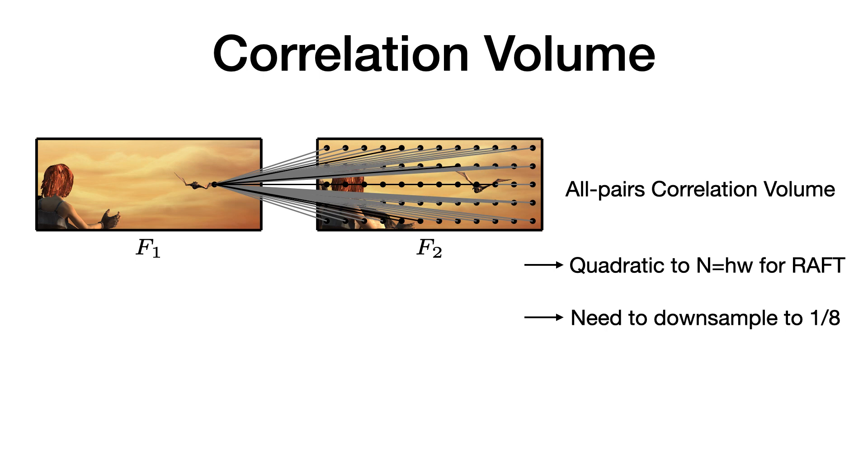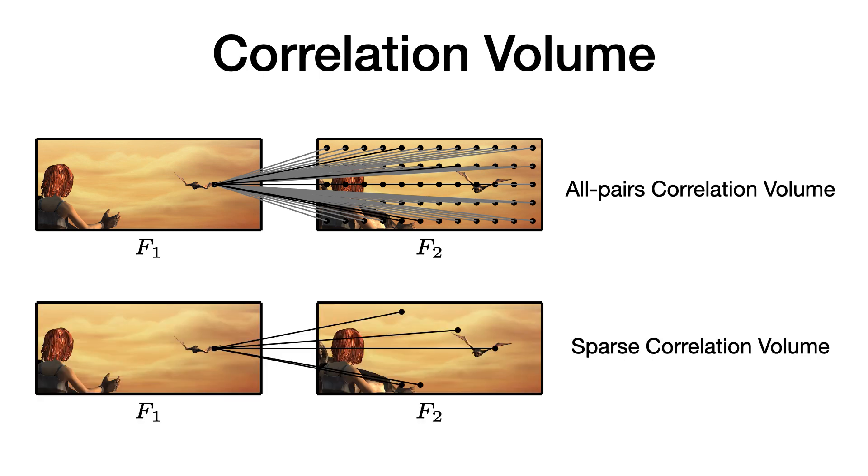In this paper, we present a new representation, the sparse correlation volume. Compared to the all-pairs correlation volume, for each feature vector, only the top k correlations and their coordinates are stored. We demonstrate that we can successfully process this representation and produce flow predictions comparable to the dense approach.